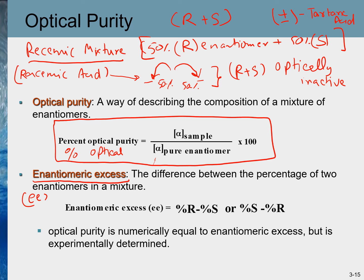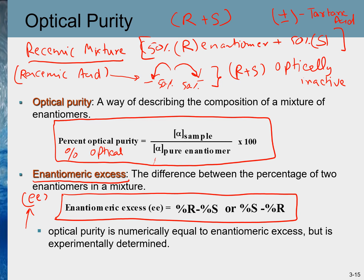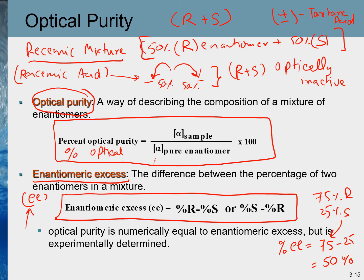Another way to describe the composition of a mixture of enantiomers is by enantiomeric excess, also denoted EE. Enantiomeric excess in percent is calculated by taking the difference in the percentage of each enantiomer. For example, a mixture of 75% R and 25% S has a percent enantiomeric excess of 75 − 25 = 50%. Both enantiomeric excess and optical purity are measured experimentally.